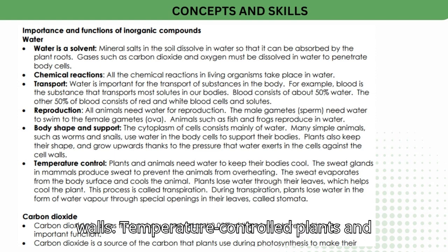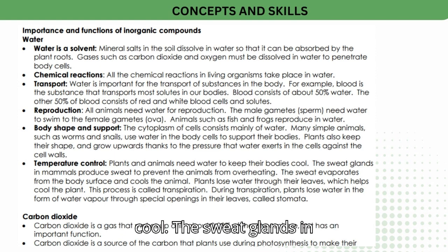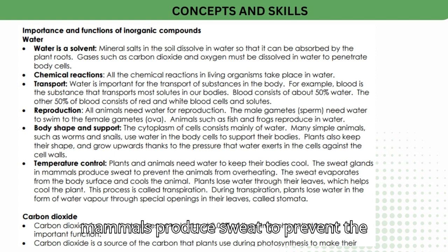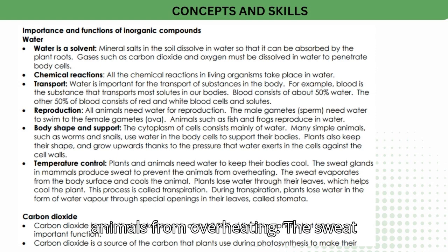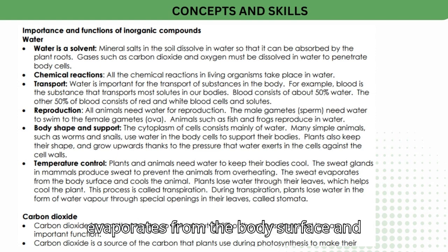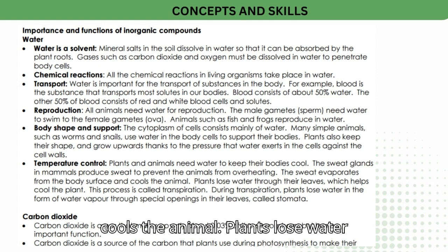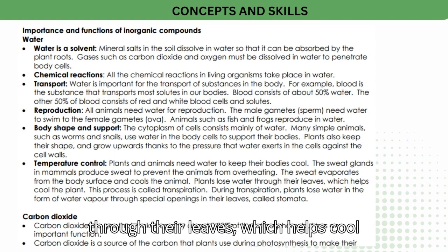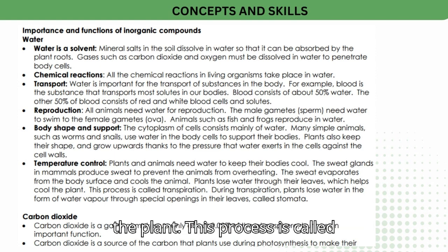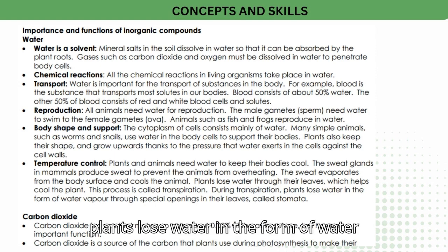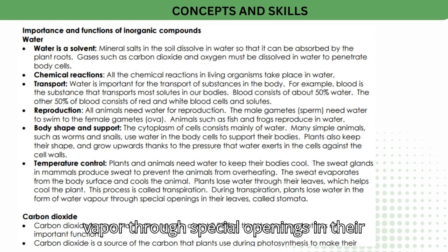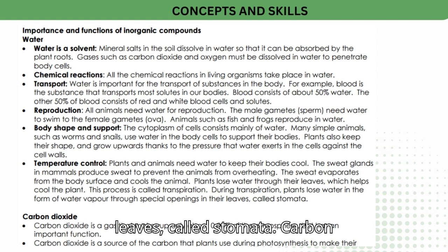Temperature control: plants and animals need water to keep their bodies cool. The sweat glands in mammals produce sweat to prevent the animals from overheating; the sweat evaporates from the body surface and cools the animal. Plants lose water through their leaves, which helps cool the plant. This process is called transpiration. During transpiration, plants lose water in the form of water vapor through special openings in their leaves called stomata.